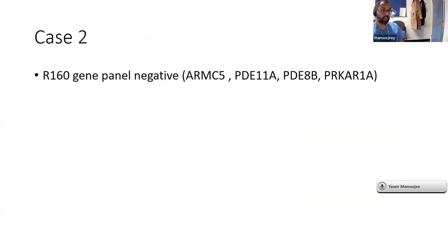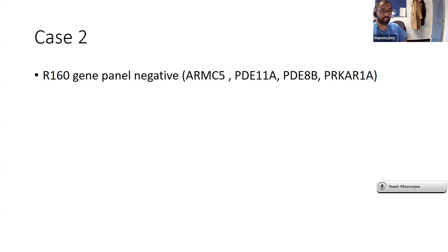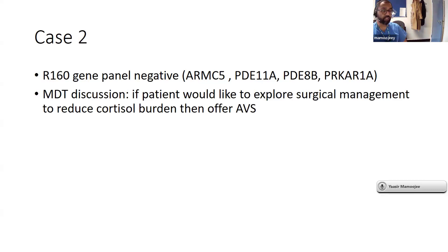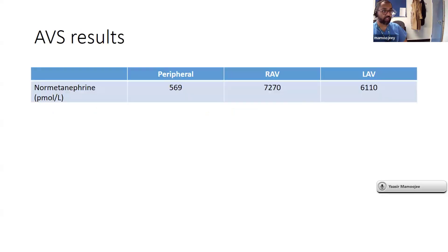Biochemical workup showed suppressed ACTH, failed low-dose dexamethasone suppression test with cortisol over 50, raised 24-hour urine free cortisol, fully suppressed aldosterone, and evidence of osteopenia. Interestingly, this gentleman did not look Cushingoid. Important to consider with bilateral adrenal lesions and ACTH-independent hypercortisolemia: some patients harbour genetic mutations predisposing to this condition. On the NHS you can offer an R160 gene panel. ARMC5 mutation has been associated with macronodular hyperplasia — if present, literature suggests medical therapy or bilateral adrenalectomy. This patient's genetic testing was negative. After MDT discussion, it was agreed to offer adrenal vein sampling if the patient wanted surgical management.